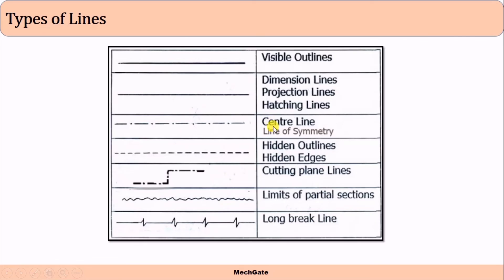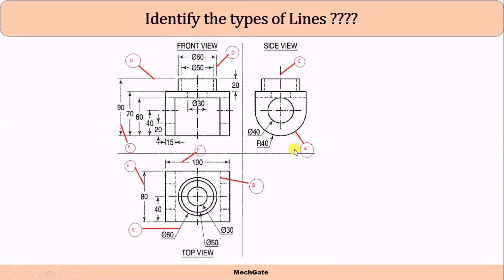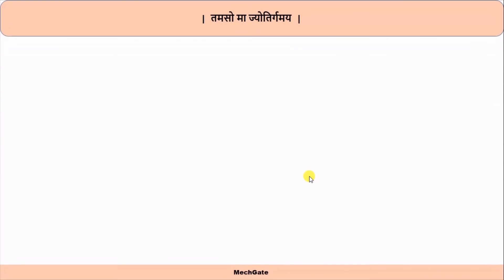I hope you are now able to understand the various types of lines. Here is an exercise for you: identify the types of lines indicated by the alphabets — you can write the answer in the comment section. If you enjoyed this video, please like, share, and subscribe, and press the bell icon to get the latest notifications. Thank you everyone.